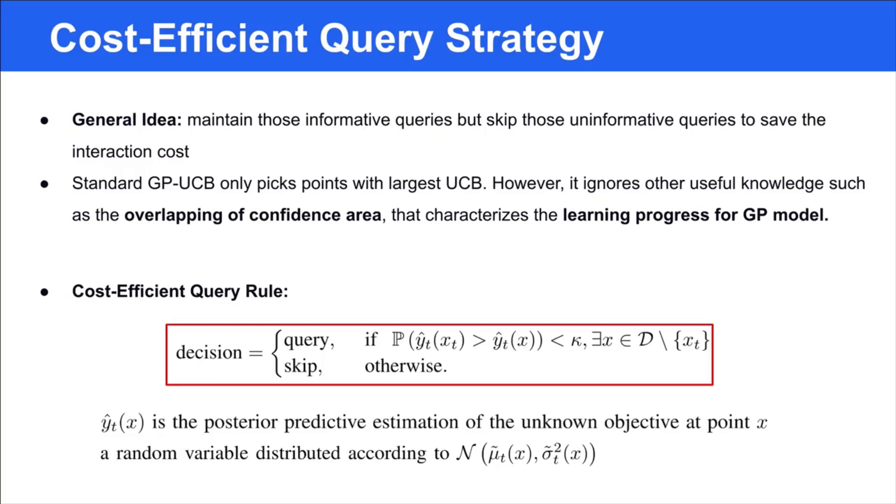Since the reward signals for online HPO vary as the learning proceeds, and similar hyperparameter configurations usually lead to similar performance, we consider using a time-variant Gaussian process, or GP, to model the underlying objective function. Standard GP-UCB algorithms will lead to a linear cumulative cost on a costly feedback setting as it requires the feedback every step.